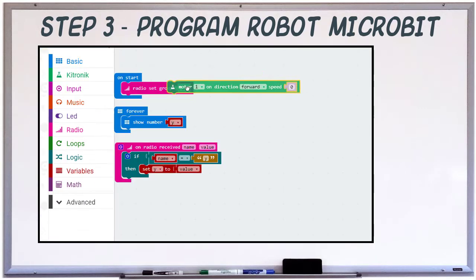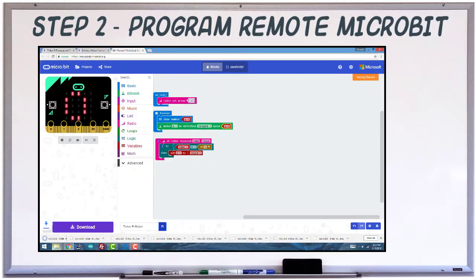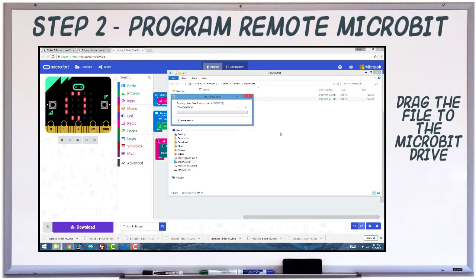In the forever loop, set motor 1 to the forward direction and the speed of y. Download the file and save that one to your robot microbit.